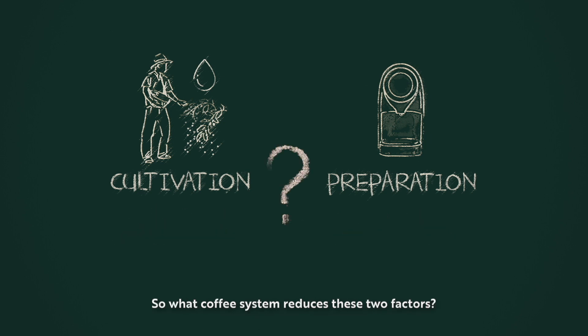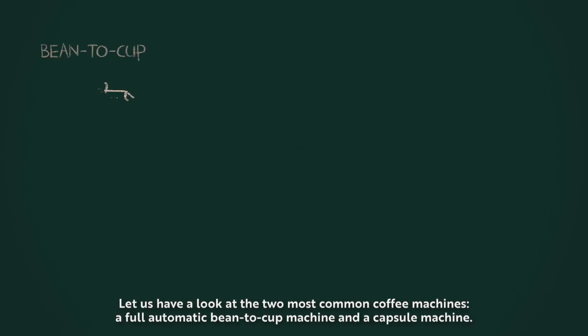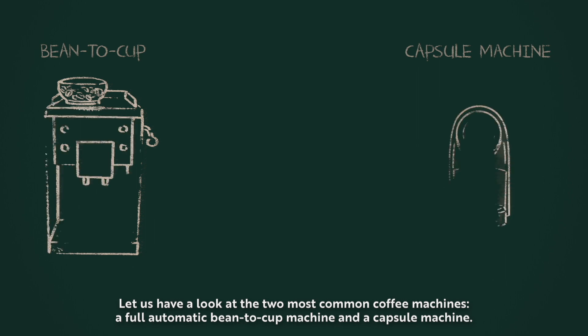So what coffee system reduces these two factors? Let's have a look at the two most common coffee machines: a full automatic bean-to-cup machine and a capsule machine.